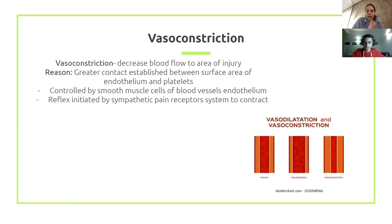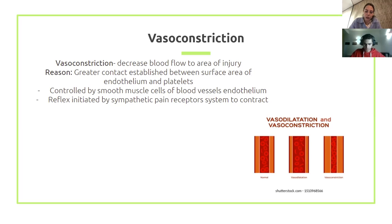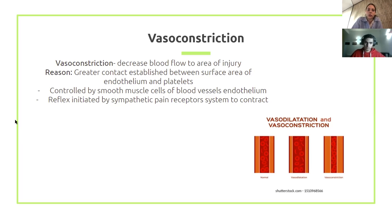The first stage is vasoconstriction. When injury occurs, smooth muscle in the blood vessel wall contracts, decreasing blood flow to the injured area. This also establishes greater surface area contact between the endothelium and platelets. Platelets are breakoffs of megakaryocyte cytoplasm. Vasoconstriction is driven through sympathetic pain receptor systems.